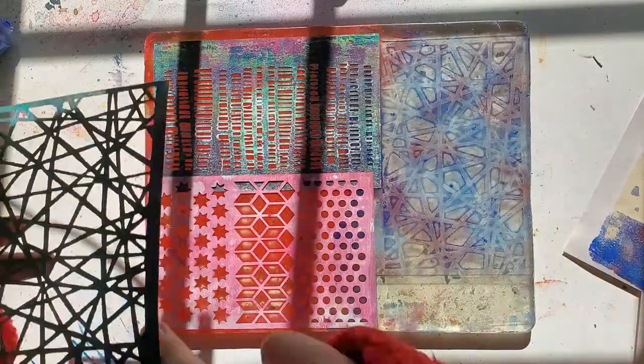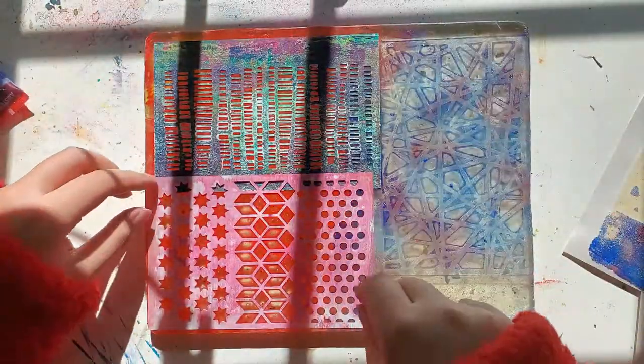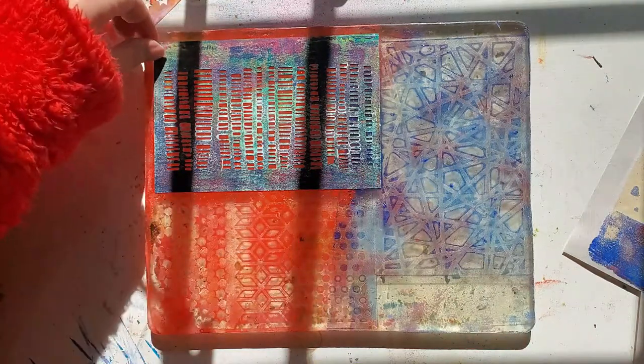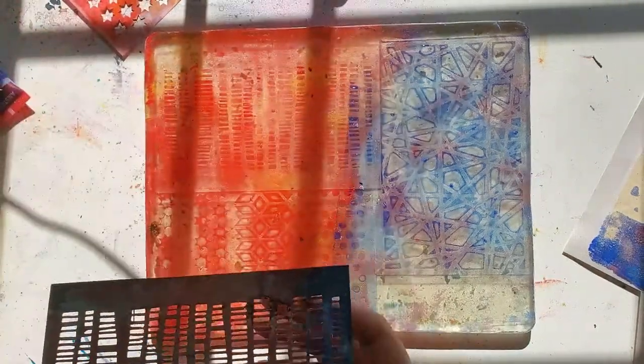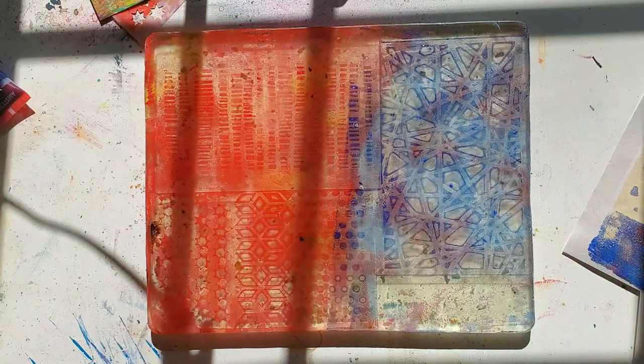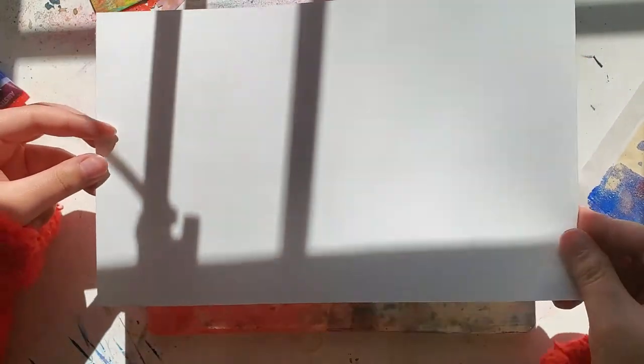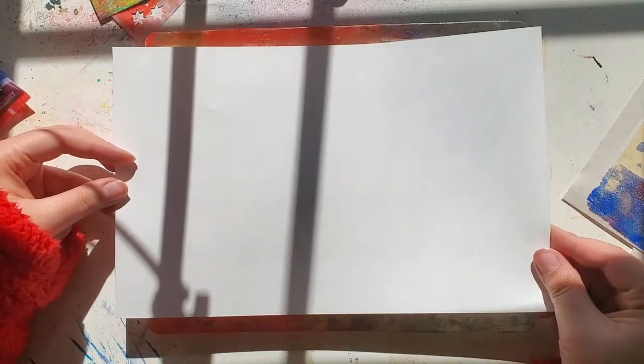But then I'm going to pull off my stencils, put it to the side, and I'm going to pull a second print. And this is the one that's going to have all the cool effect. So I am going to use a white piece of paper so you can see better. And this is also a little bit thicker.